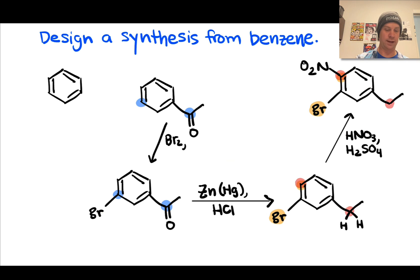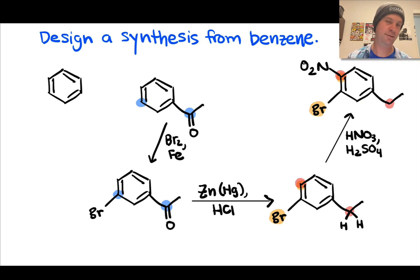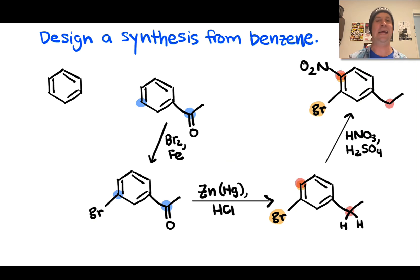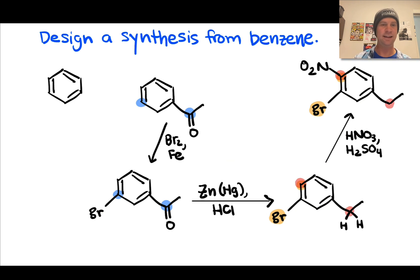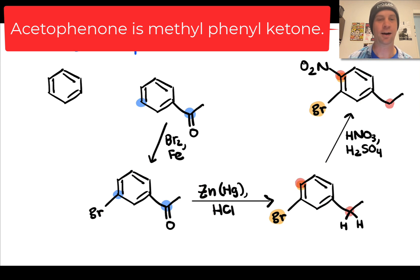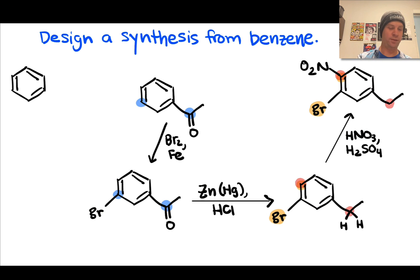Bromination uses Br₂ with Fe, forming FeBr₃ in situ, or FeBr₃ or AlCl₃ — your Lewis acid of choice. This selectively gives the meta-substituted acetophenone.